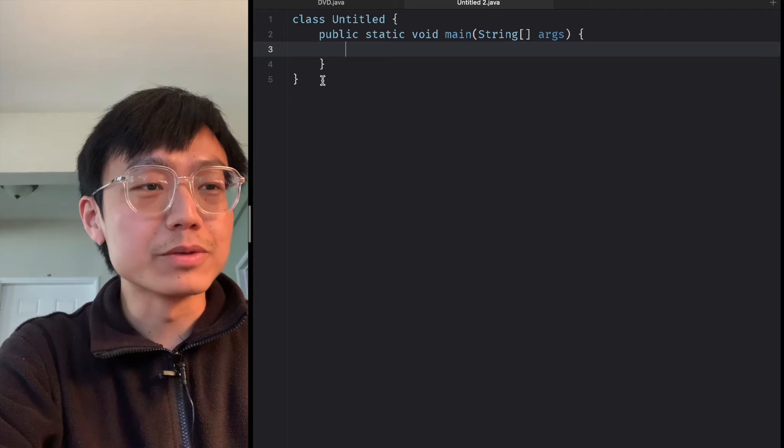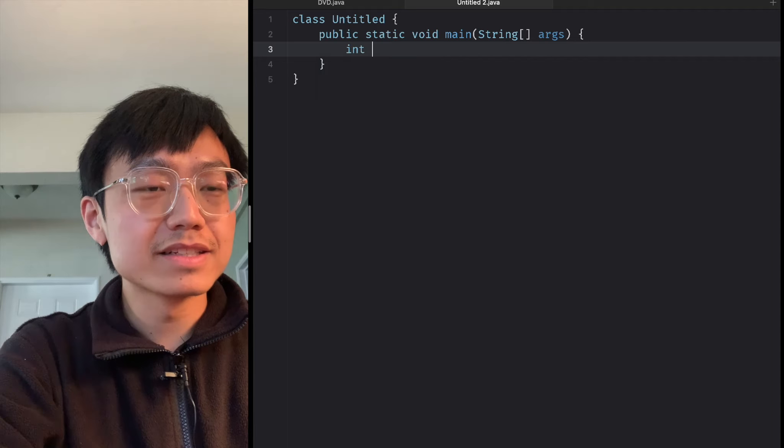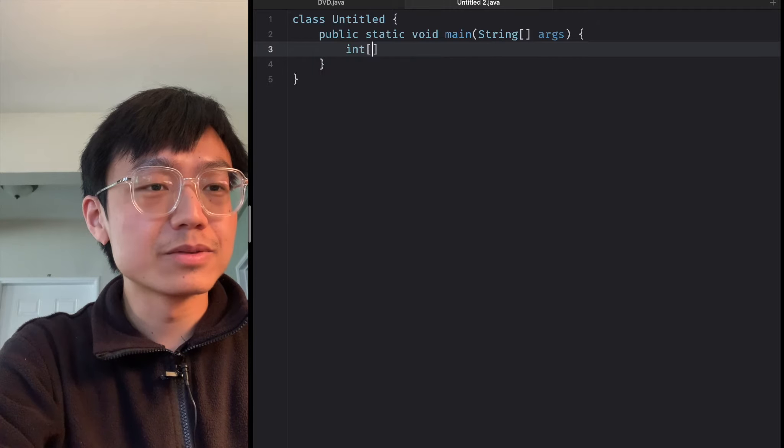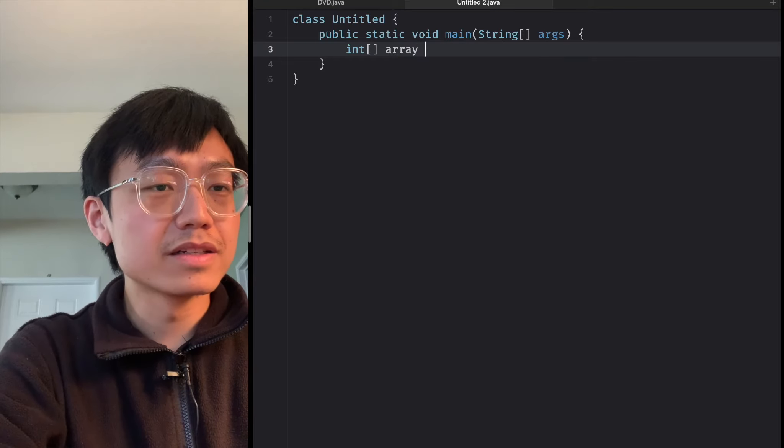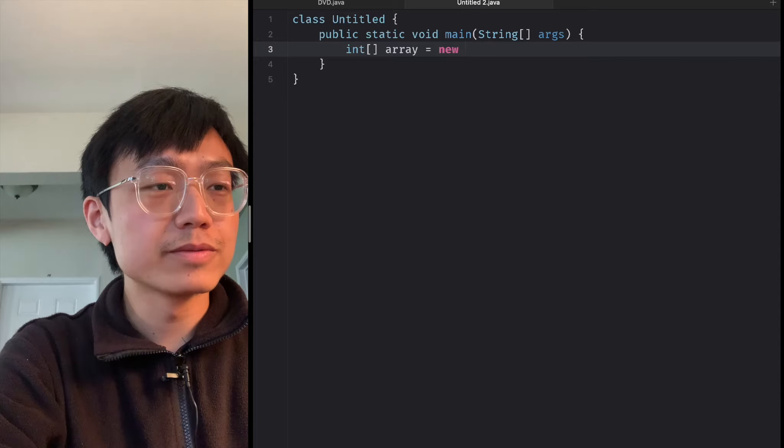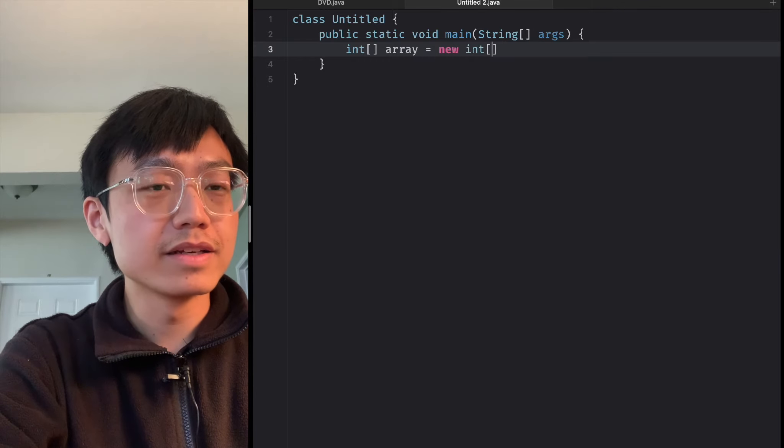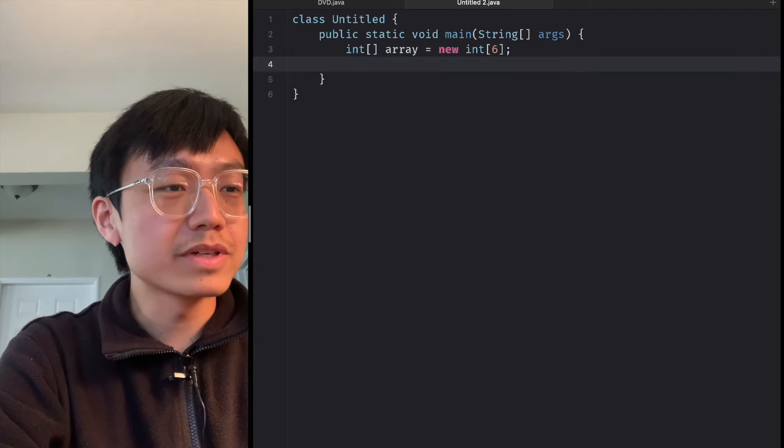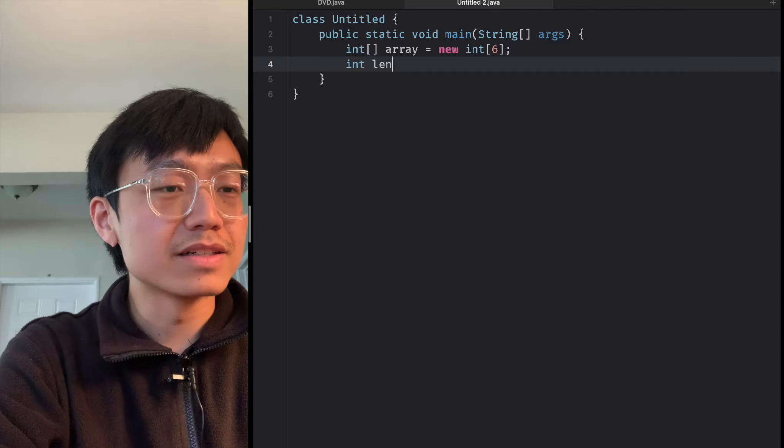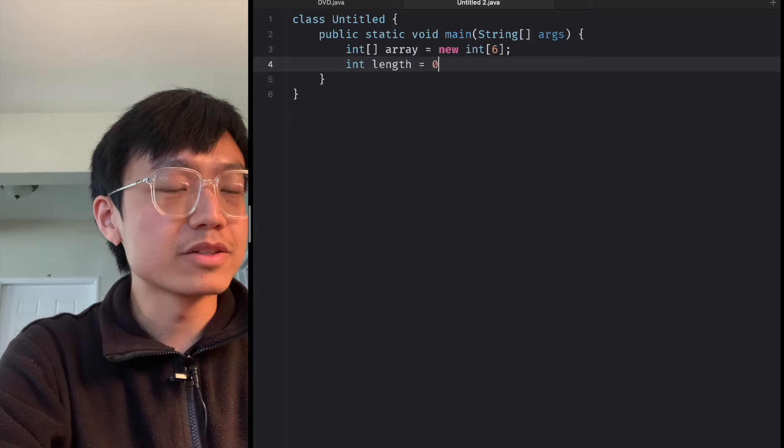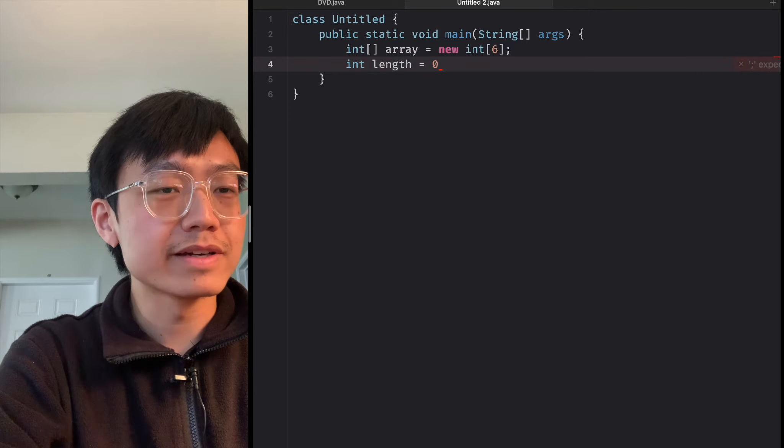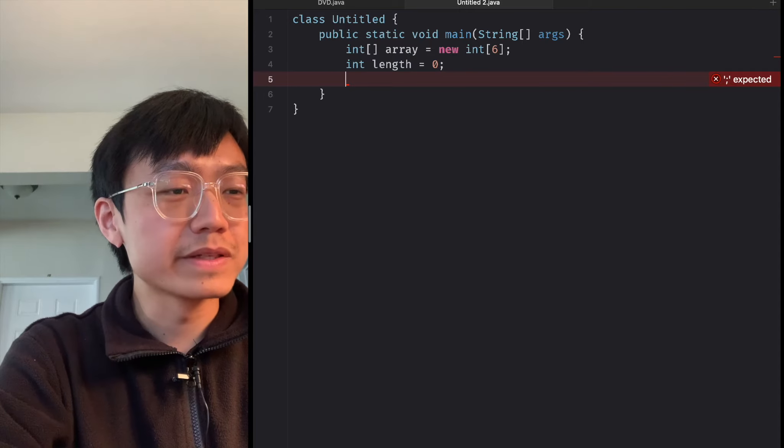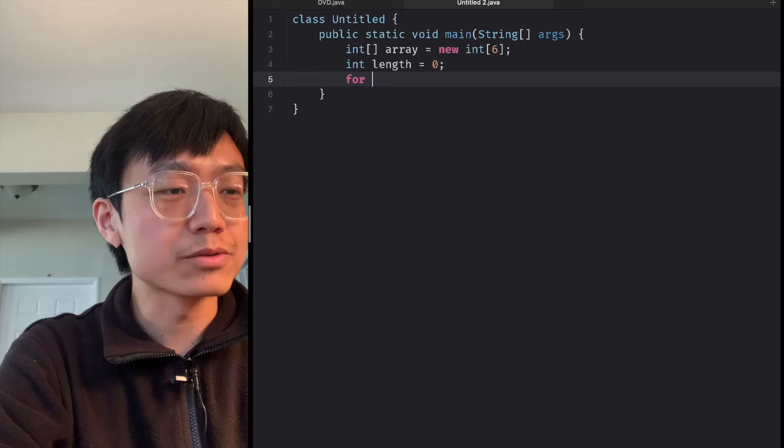Let's create a new array: int array new with a sixth capacity. So current length is zero because we have zero elements. And we set a for loop to add three items in it.